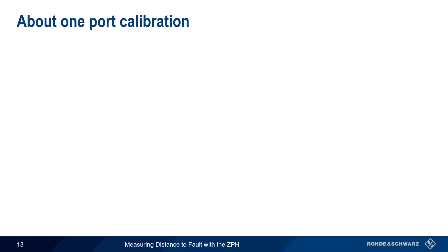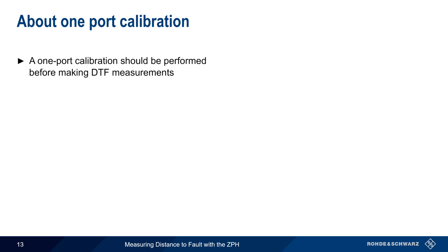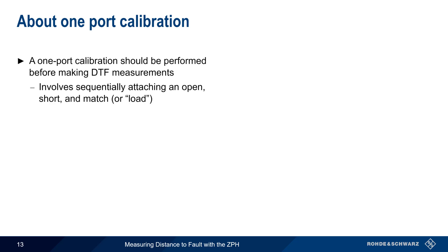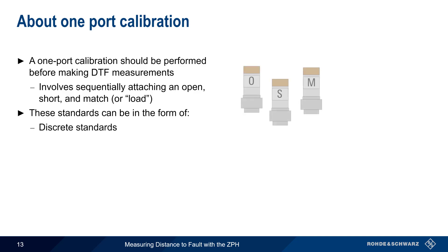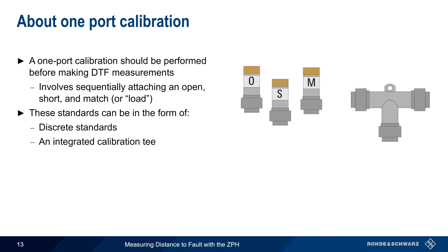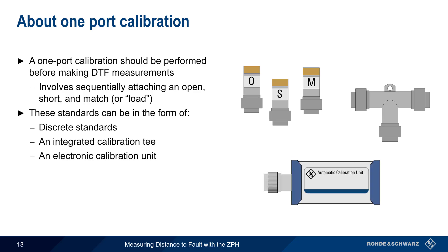After configuring parameters, the next step is to perform a one-port calibration. This process involves sequentially attaching an open, a short, and a match or load to the location where the cable under test will be connected. These standards can be in the form of discrete standards, or may be combined into a calibration T. In addition to these manually attached standards, electronic calibration units can also be used. These units switch their internal standards in and out automatically, and are controlled by the ZPH.